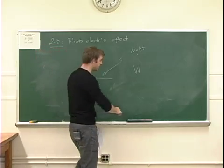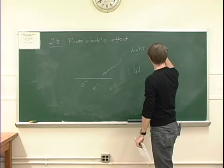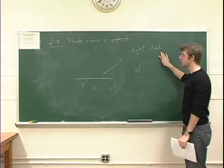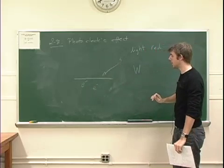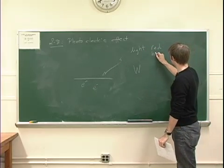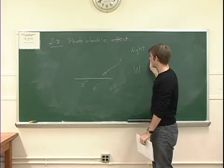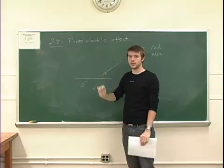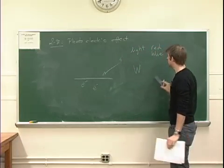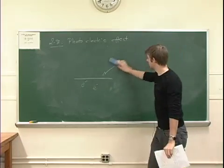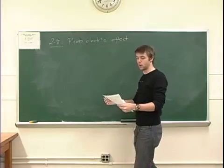Instead, the only thing that seemed to matter was the color. If the light was red, it didn't matter how much red light you put on there — you would perhaps never see any electrons jump off the metal. However, if you had blue light, even with perhaps the most minute amount of light, you could still see electrons come off. That was one of the stunning things that classical physics could not predict, which is why the photoelectric effect was the birth of quantum mechanics.